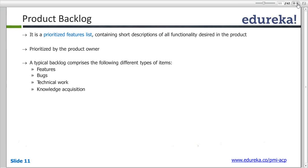Whereas the product backlog would have all the requirements in the form of a story. It is a complete list of features, and based on your discussions with the client and product owner, you prioritize that feature list.